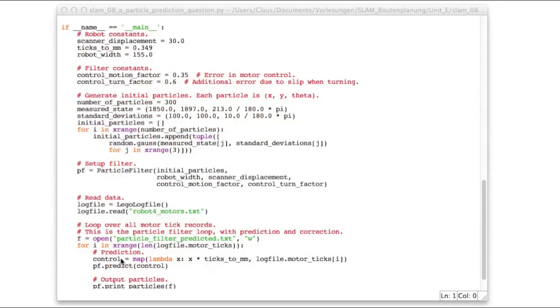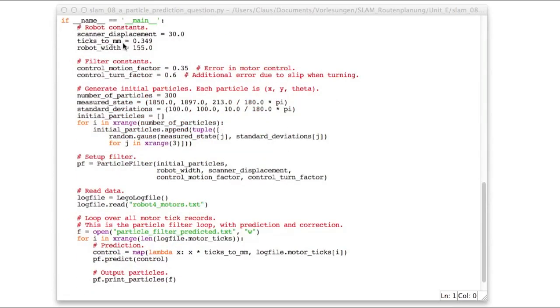Now let's go to the main function. As usual, here is the initialization of some robot constants, and of the control motion factor and control turn factor. And these are exactly the same values as those that we used in the Kalman filter.